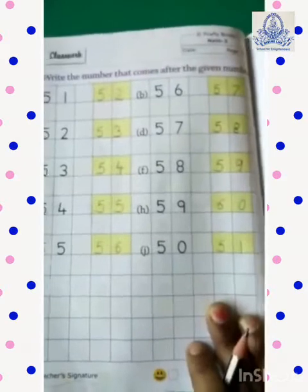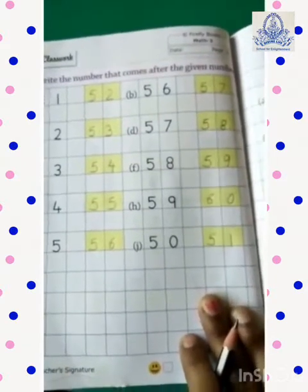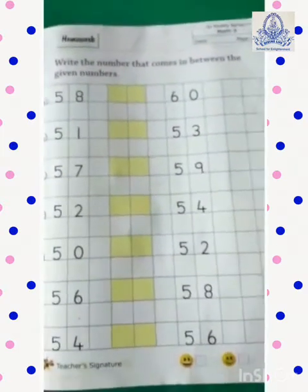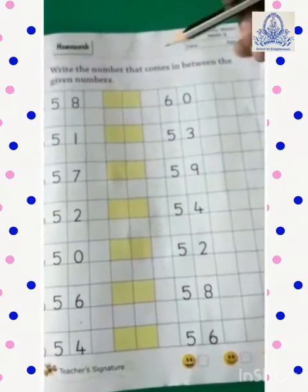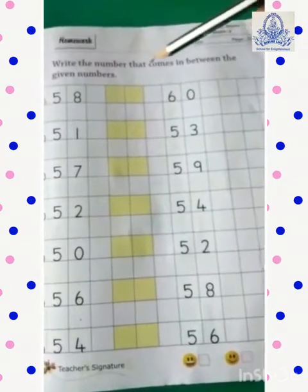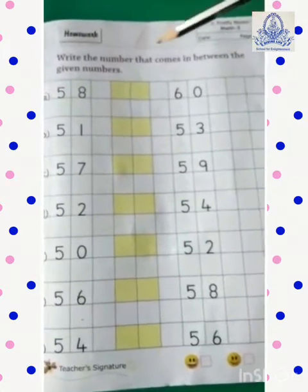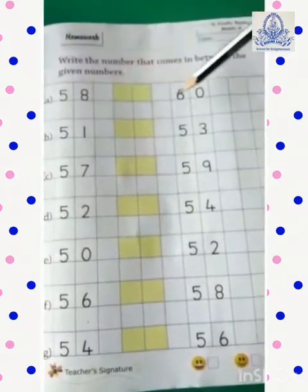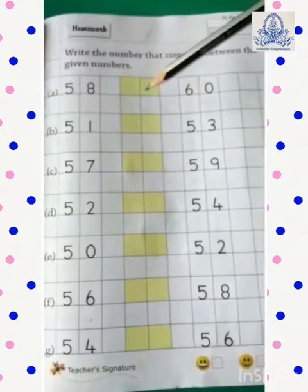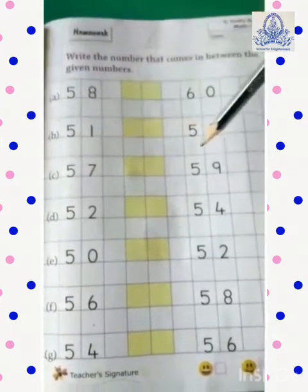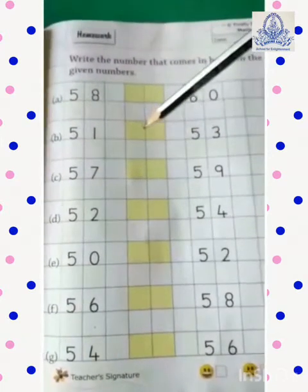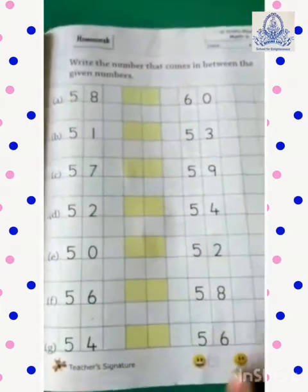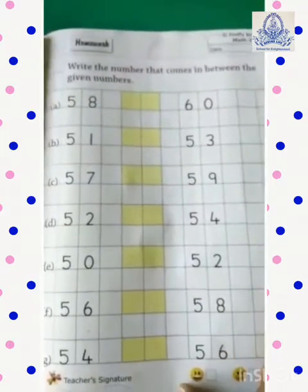Okay. Completed. Now, come to the next page — page number 52. This is your homework. इसमें क्या करना है आपको? Write the numbers that come in between the given numbers. यहाँ पे आपको between numbers लिखने हैं. 58 और 60 के बीच में कौन सा आता है? 59. 51 and 53 के बीच में? 52. Okay. This way में आपको यह page as a homework complete करना है.